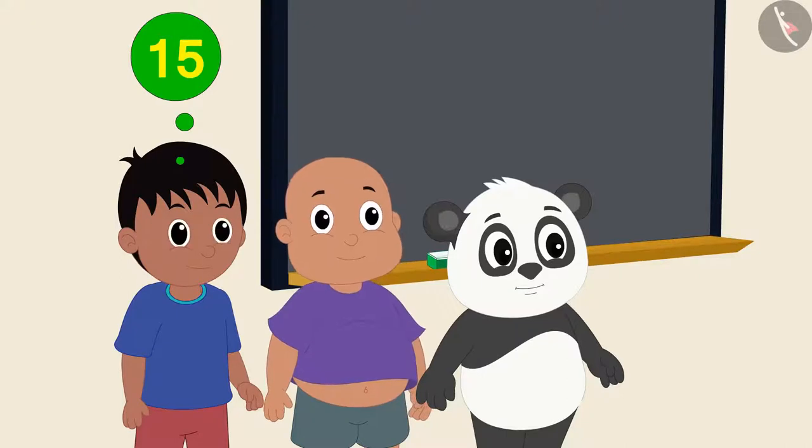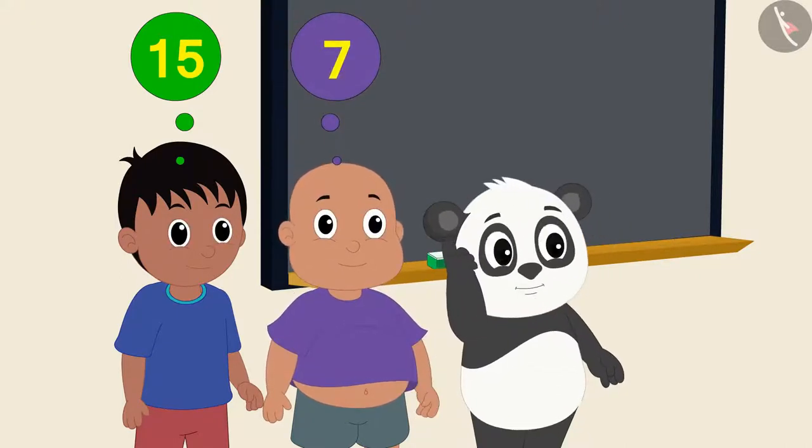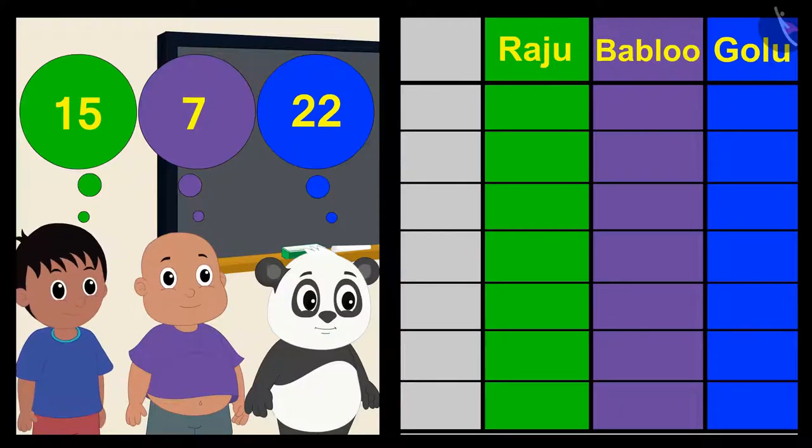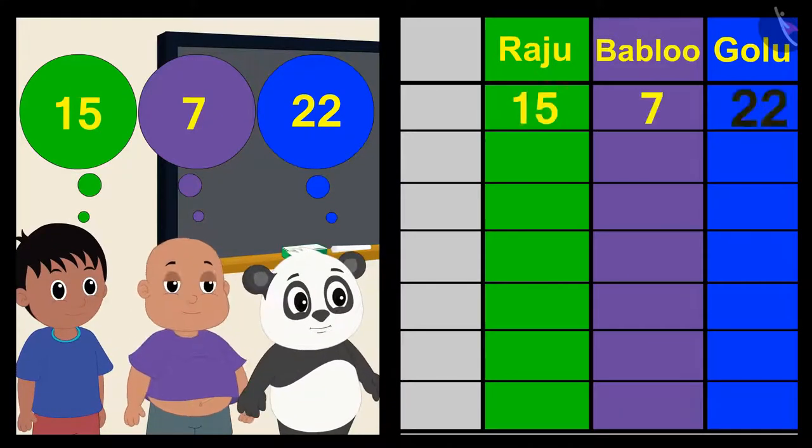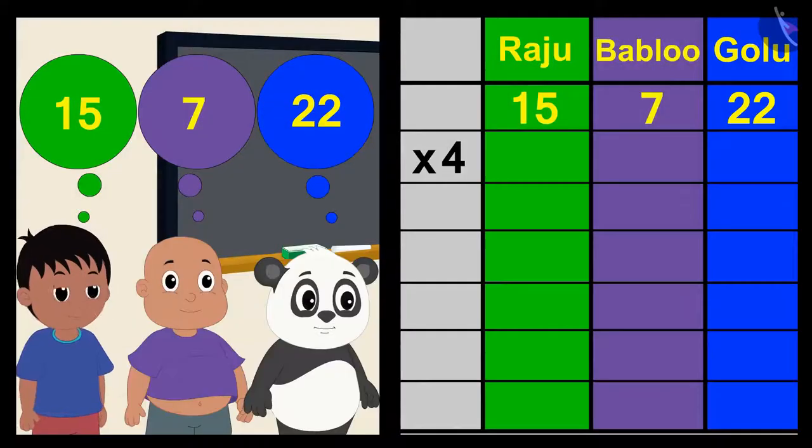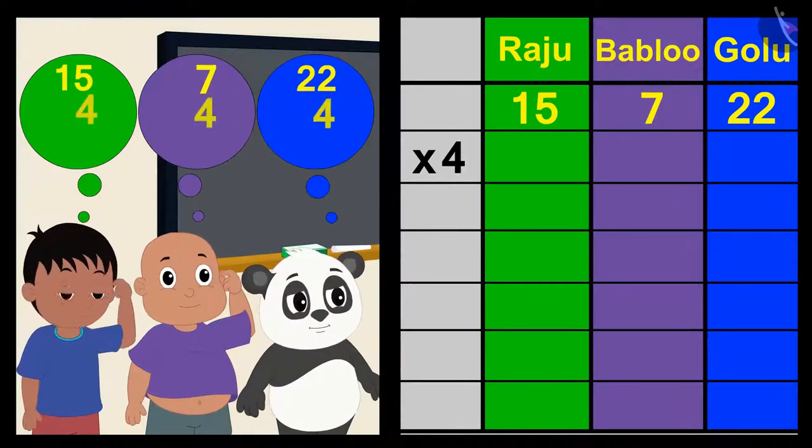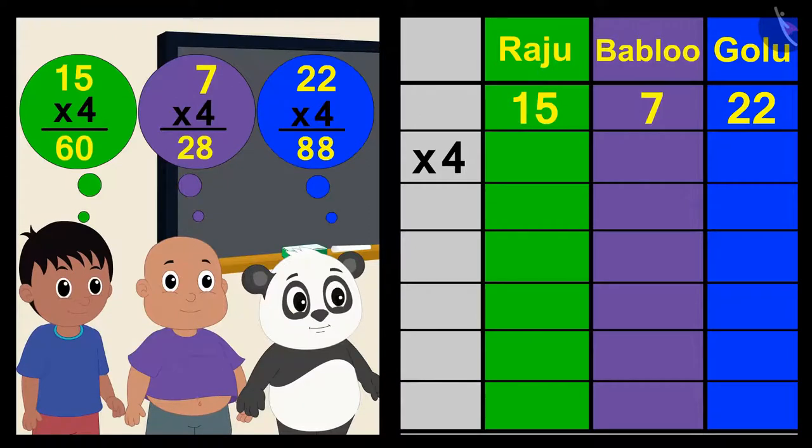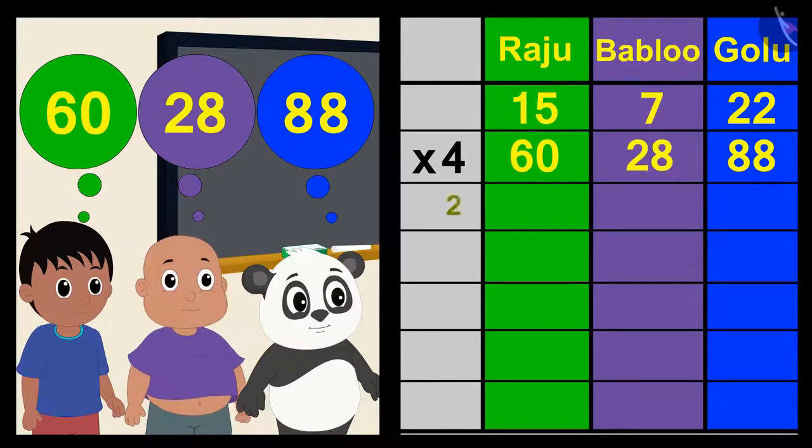Bablu thought of this number and Golu thought of this number. Now multiply your number by four, Shere Khan told the three children. The three children quickly multiplied their numbers by four in this way.